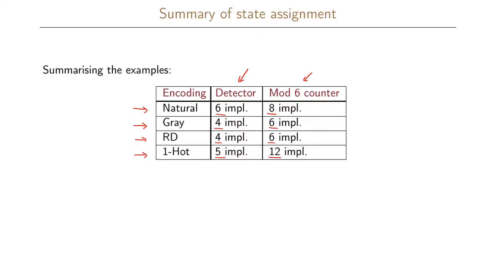The main problem that we had for one hot here was that we had to realize six different functions. And again if we compare them, we can see that the gray coding and the reduced dependency coding performs best. This doesn't necessarily mean that they always perform best.